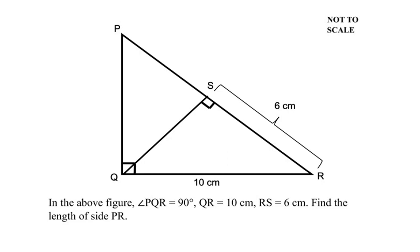Hello and welcome to my channel. In this video, we are going to solve an example on triangles. In the above figure, angle PQR is 90 degrees, side QR is given as 10 centimeters, side RS is given as 6 centimeters. Find the length of side PR.